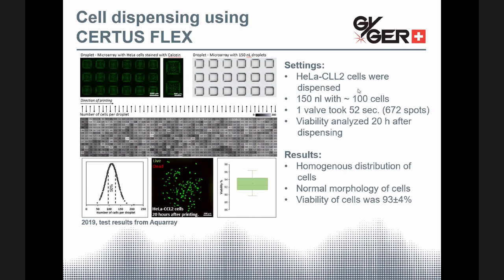The viability was then analyzed 20 hours after dispensing. And as the results show, the cells were distributed homogeneously. They looked alive and from the morphological point of view, they looked comparable to those of a normal cell culture. And the viability of the cells was 93%. After all, scientists at AquaArray found the CertusFlex to be the perfect match for dispensing the cells onto their DMAs. And with this, I'd like to hand over to my colleague, Boris, who will give a demonstration on how the CertusFlex dispenses onto these droplet microarrays.